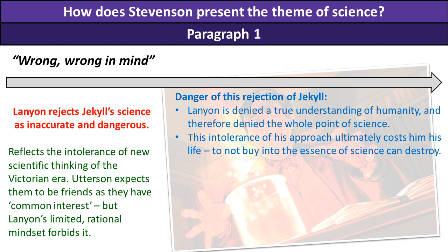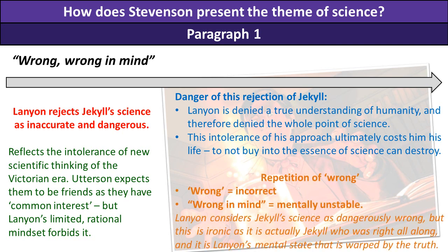Science requires you to be open-minded, tolerant, and to embrace new ideas — otherwise it kills you, the same way it kills Lanyon. Stevenson uses the repetition of the word 'wrong': wrong meaning incorrect, but also 'wrong in mind', reflecting mental instability. So Lanyon considers Jekyll's science dangerously wrong, but this is ironic, as it is actually Jekyll who is right all along, and it's Lanyon's mental state that is warped by reality.